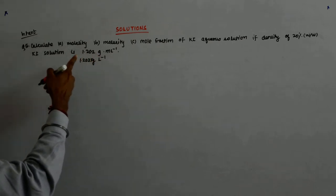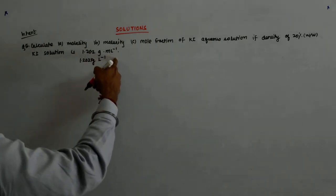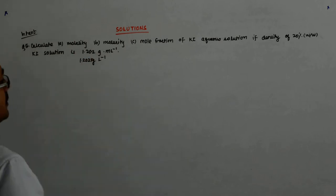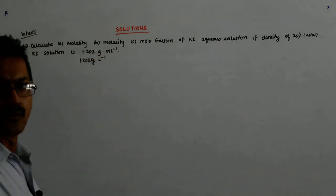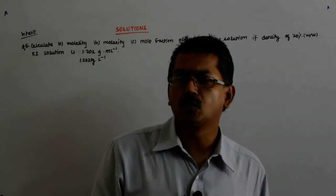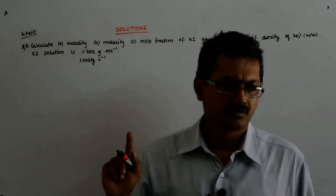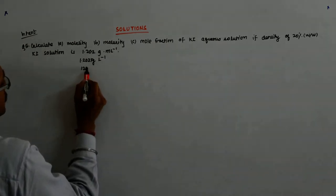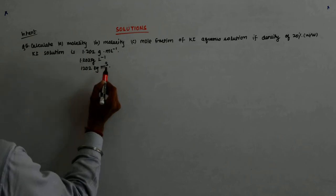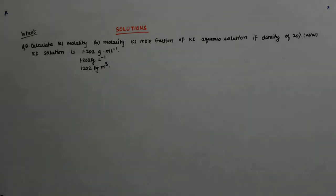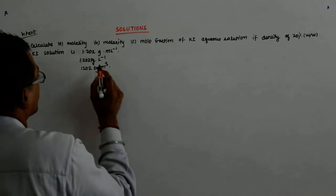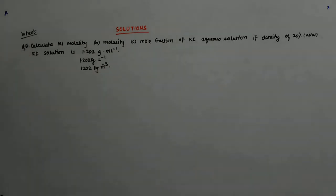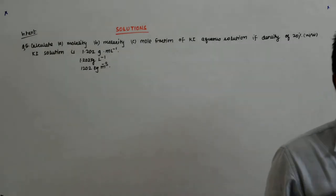If there was 1000 ml that is equal to 1 liter, so in 1 liter the solution will weigh 1.202 grams. Or it could have been 1.202 kg per meter cube, because 1 liter is 1 upon 1000 meter cube. So do not get confused.